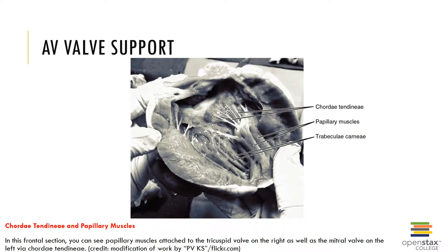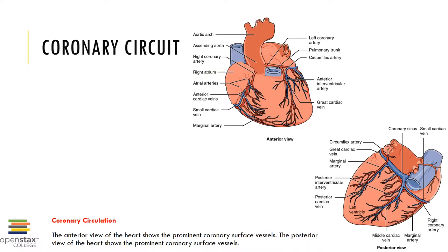Here you can see the support provided by the chordae tendineae and papillary muscles for the AV valves. In the coronary circuit, deoxygenated blood from the body flows into the right atrium via the superior vena cava, inferior vena cava, and coronary sinus.